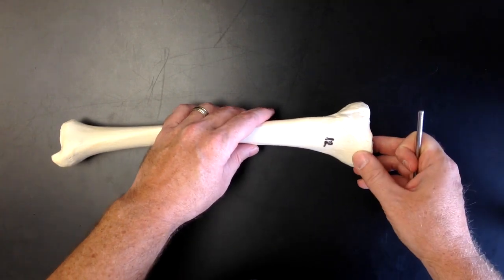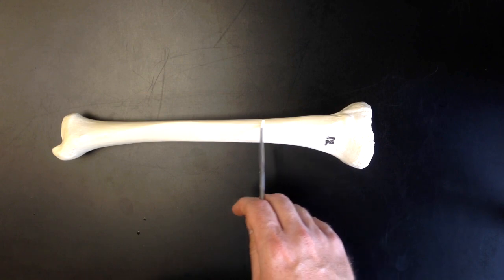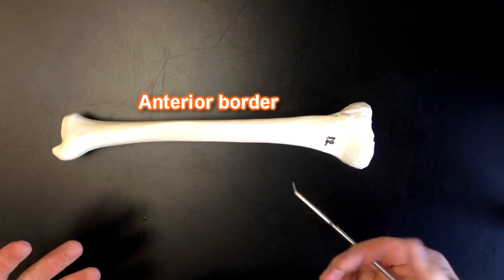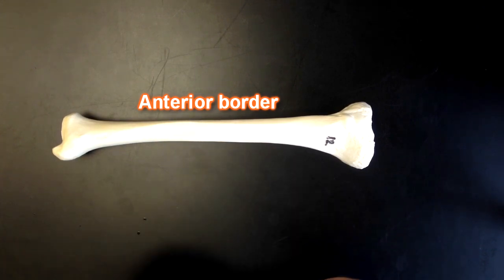If I set this down, we can see other structures on the anterior surface. We can see this anterior border of the tibia right here. This tibia would make up your shin bone, so if you were to get kicked in the shins, this is the part that would get kicked.